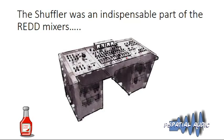They considered the shuffler an indispensable part of the stereo system, and it was incorporated in the famous RED 37 and RED 51 mixers developed for EMI stereo recording studios. The RED 51 is illustrated here — sometimes called the Beatles mixer because it was used to record all the significant Beatles records throughout their career.